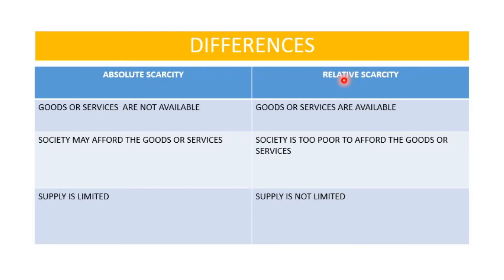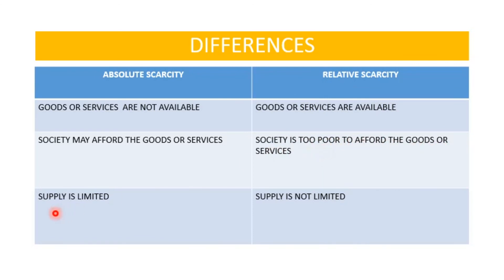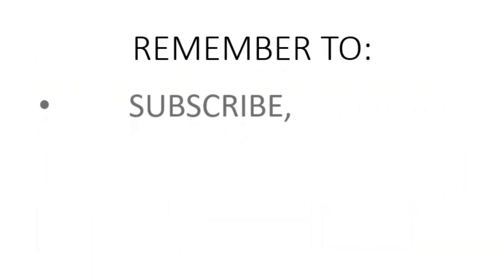Let's look at the differences between absolute scarcity and relative scarcity. With absolute scarcity, goods or services are not available; with relative scarcity, the goods or services are available. Secondly, society may afford the goods or services in absolute scarcity, but for relative scarcity, society is too poor to afford them. Finally, in absolute scarcity the supply is limited, whereas in relative scarcity the supply is not limited.